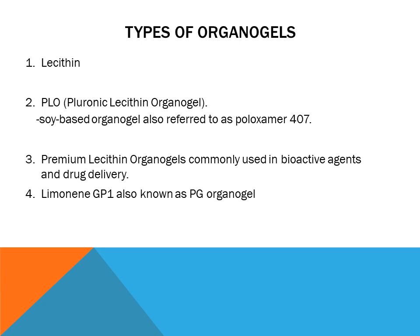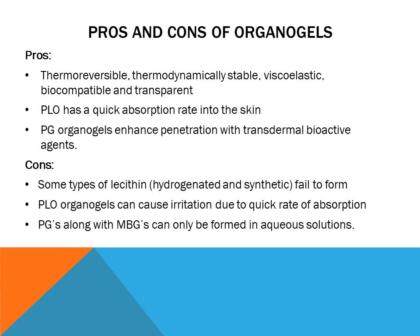Types of organogels. Number one: lecithin. Number two: PLO, pleuronic lecithin organogel, which is a soy-based organogel also referred to as polaxomer 407. Number three: premium lecithin organogels, which are commonly used as bioactive agents in drug delivery. Number four: limonene GP1, also known as PG organogel. Pros: thermoreversible, thermodynamically stable, viscoelastic, biocompatible, and transparent. PLO has a quick absorption rate into the skin. PG organogels enhance penetration with transdermal bioactive agents. Cons: some types of lecithin — hydrogenated and synthetic — fail to form. PLO organogels can cause irritation due to a quick rate of absorption. PG's along with MBG's can only be formed in aqueous solutions.